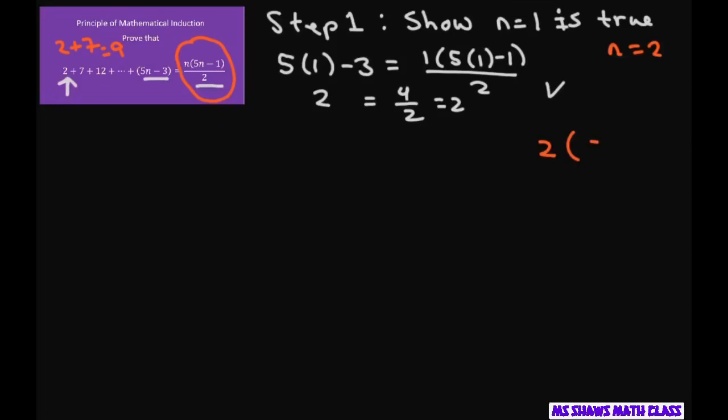So if I plug in 2, you get 2 times 5 times 2 minus 1 divided by 2. So that's going to give you, the 2's cancel, so 10 minus 1 is 9. So what we're trying to prove is that it works for each next term. So we don't want to sit here and keep writing n equals 3, n equals 4. So what we're trying to prove is that it works for all numbers.